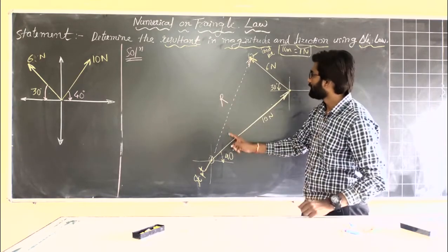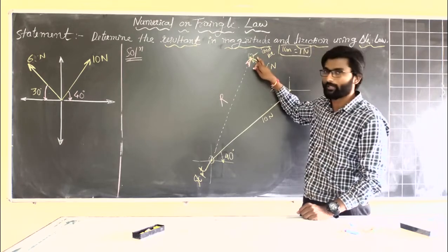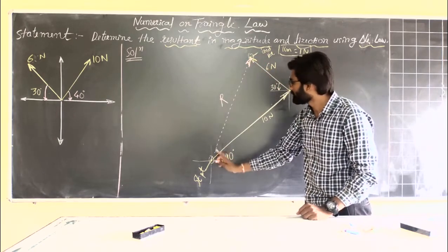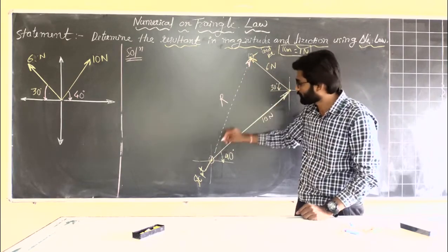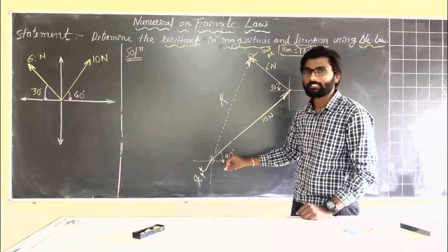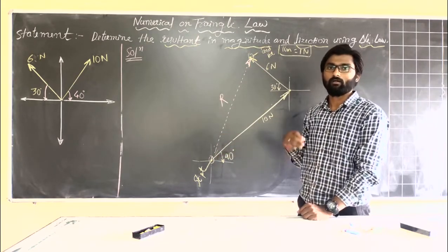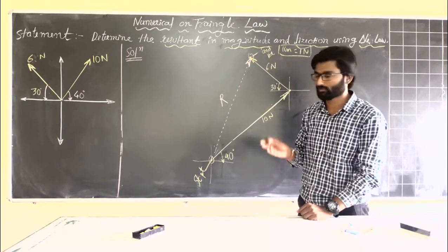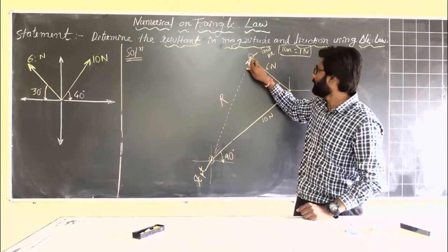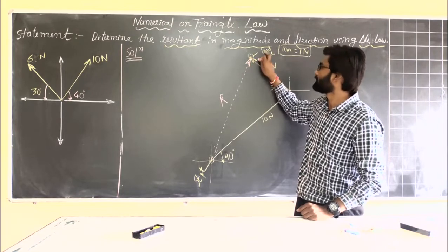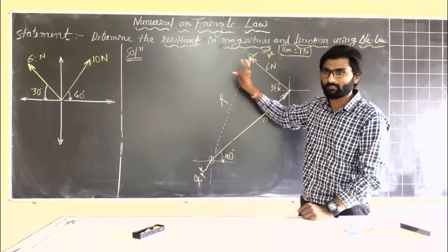The line joining the starting point with the end point gives you the resultant. The direction of the resultant should be towards the end point. If by mistake you show the opposite direction, then the resultant appears to move in the third quadrant, giving a wrong answer and wrong direction. So keep in mind: when joining the starting point and end point, the direction must be towards the end point to get the correct direction of the resultant.